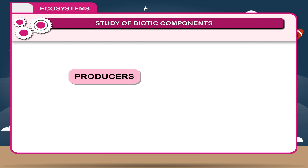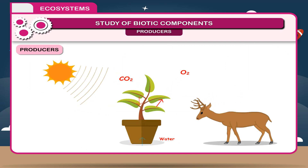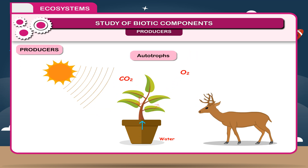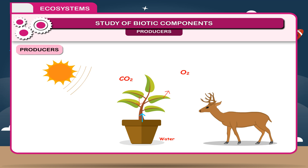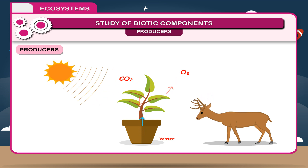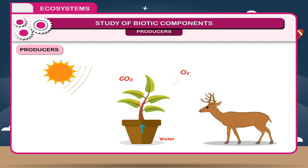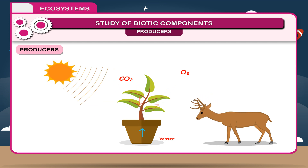Plants are the only producers in this ecosystem. They are also called autotrophs. All living organisms that manufacture their own food in the presence of sunlight are autotrophs, and only plants can do so. They make their food by the process of photosynthesis, using the sun as an energy source.